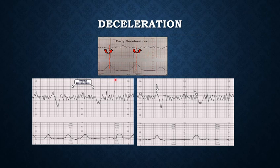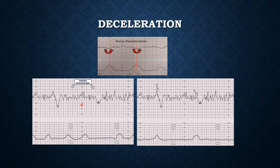In this slide we can see different types of deceleration. Deceleration means dropping of fetal heart rate more than 15 beats per minute lasting at least 15 seconds. Early deceleration, seen in the first picture, corresponds with uterine contraction symmetrically — it is a normal finding occurring in head compression. Variable deceleration usually does not correspond with uterine contraction and occurs during umbilical cord compression. Late deceleration occurs after uterine contraction, meaning the nadir of deceleration does not correspond with the peak of uterine contraction — this is a pathological finding that occurs during uteroplacental insufficiency.